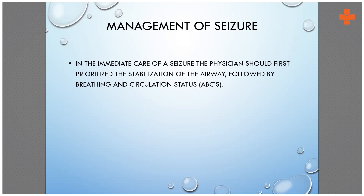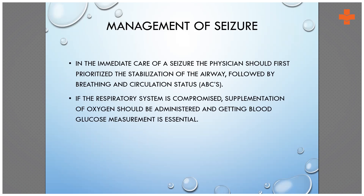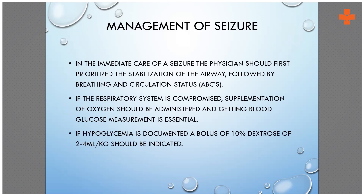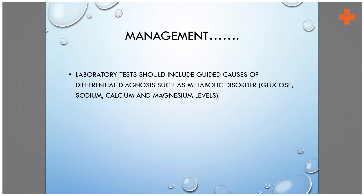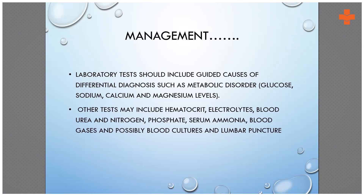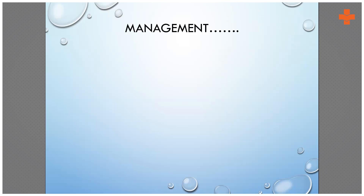Always start with the ABCs. If the respiratory system is compromised, start supplemental oxygen by nasal prong. Get a blood sugar measurement done and treat hypoglycemia. If a metabolic disorder is present, treat accordingly. Get hematocrit, electrolytes, blood urea nitrogen, phosphate, ammonia levels, blood cultures, and a CSF study done.